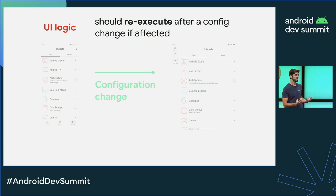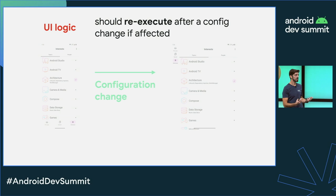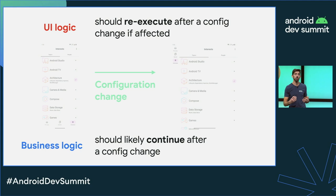On the other hand, business logic should likely continue after a configuration change. You might not want to cancel an ongoing request to follow an author just because the user rotated the device or unfolded it — that wouldn't be a great user experience.